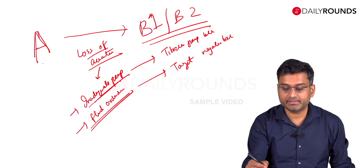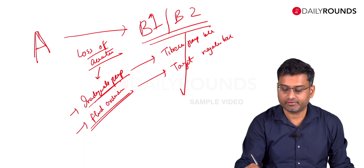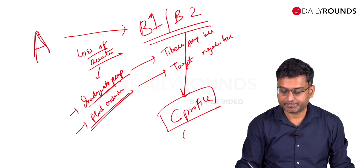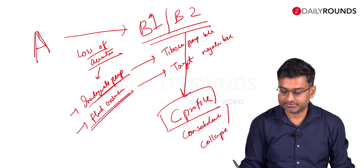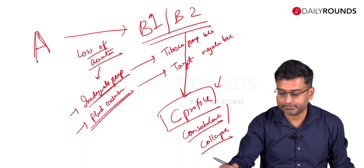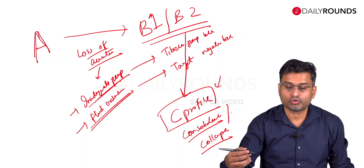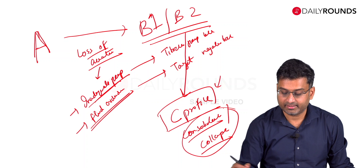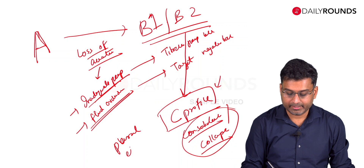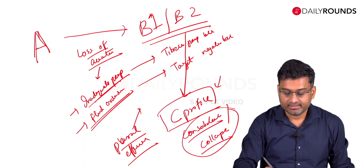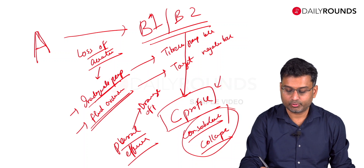If a patient who had a B1 or B2 profile now develops a C profile, it indicates development of consolidation or collapse. In those cases, we might need to send cultures, titrate antibiotics, perform bronchoscopy, and intensive chest physiotherapy to treat consolidation and collapse appropriately. We might also see pleural effusions, and depending on clinical context, patients with a large effusion might need drainage.